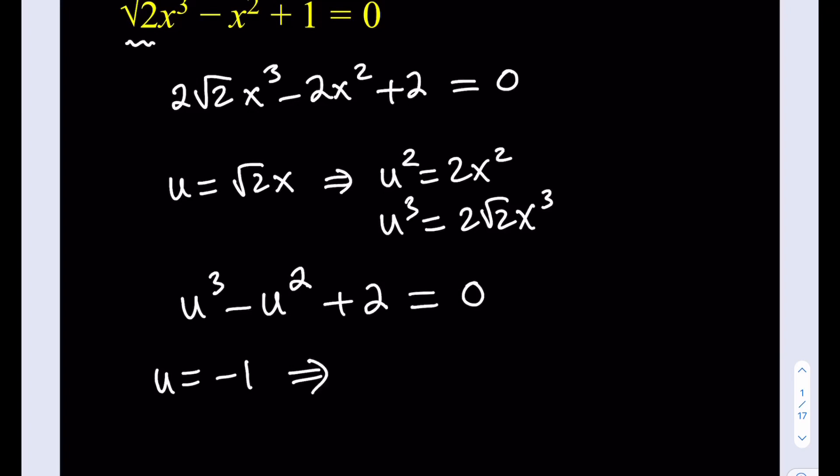Let's go ahead and plug it in and see what happens. I get negative 1 cubed minus negative 1 squared plus 2, and this is negative 1 minus 1 plus 2, and that's equal to 0, which means u equals negative 1 is a solution.